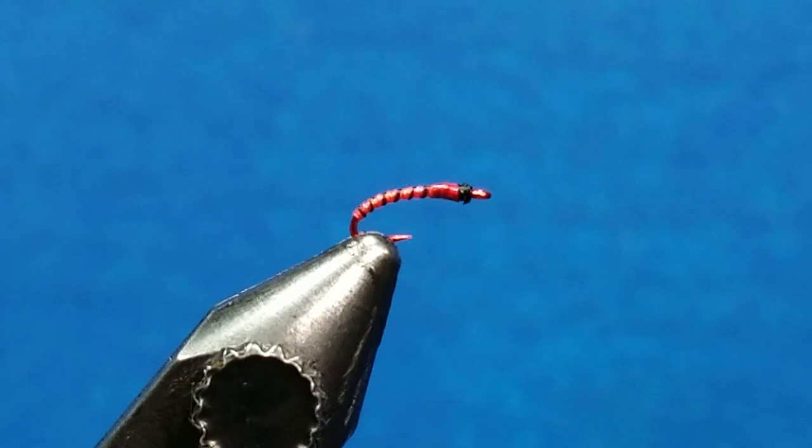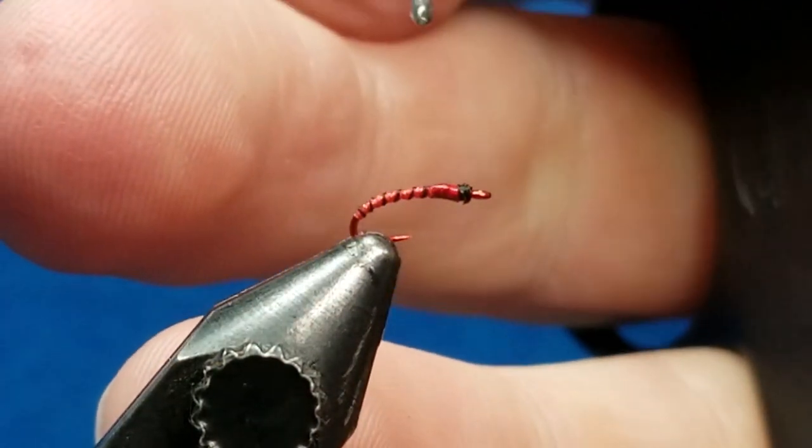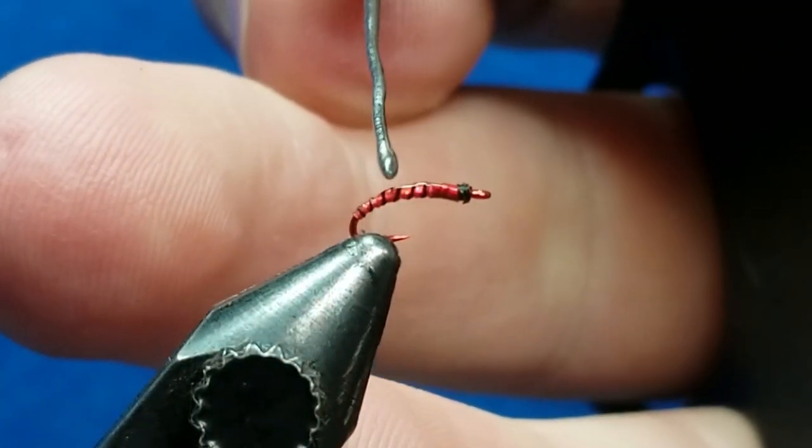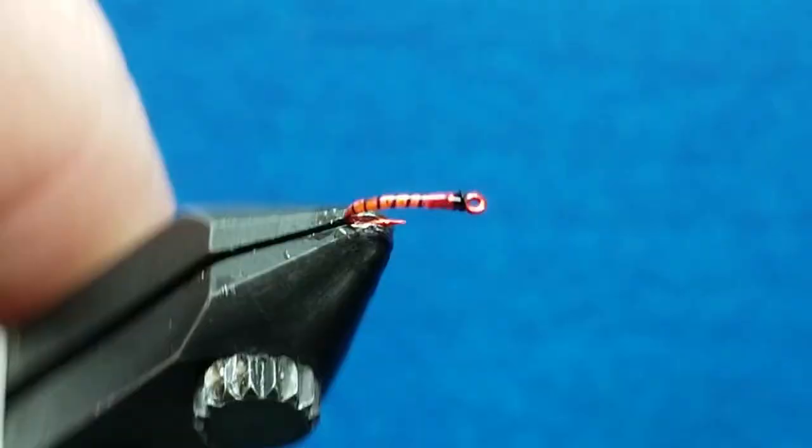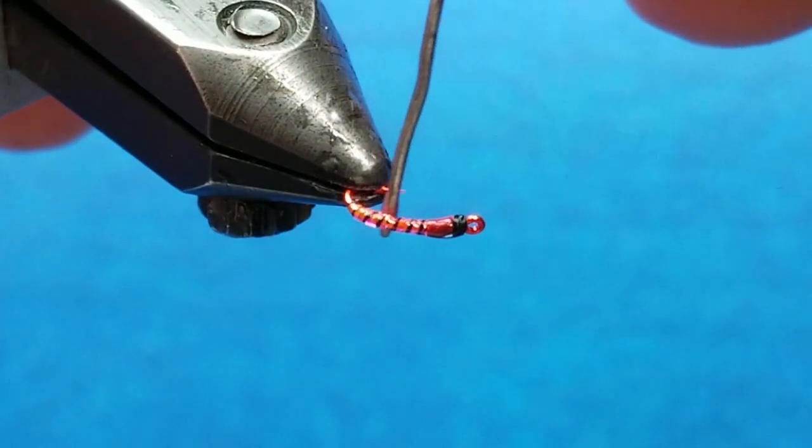I'm going to bring in a little bit of epoxy here. I just use a blunt end bodkin to spread this out. We want to be sparse with the epoxy - you want that nice transparent clear coat, but you don't want to build up the profile of the fly in any unnecessary way.